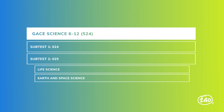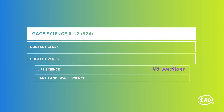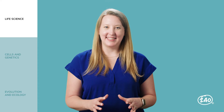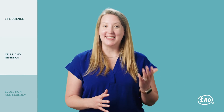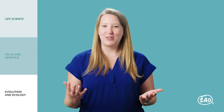We've made it through the whole first subtest — one down, one to go. Subtest two covers life science, which will make up about 48 questions on your exam, and earth and space science, which will make up about 32 questions. We'll break these sub-areas down into objectives so that you know what you need to focus on. Let's start with life science, which can be broken down into cells and genetics, and evolution and ecology.